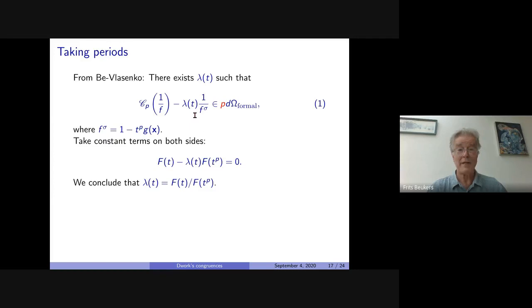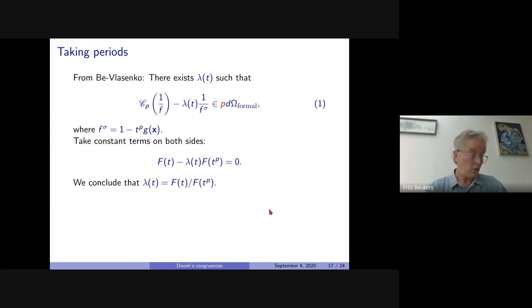Our theorem also says there exists a lambda(t) such that the Cartier operator applied to one over F equals lambda(t) times one over F^sigma (where F^sigma has t replaced by t^p), plus a formal derivative term multiplied by p. Taking constant terms on both sides: on the left side, C_p does nothing to the constant term, giving f(t); on the right side we get lambda(t) times f(t^p). Since constant terms of derivatives are always zero, we conclude that lambda(t) equals f(t) divided by f(t^p). This was precisely the identification we sought.